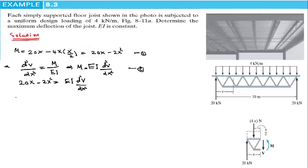Now we integrate two times in order to get v. Integrating once, we have EI multiplied by dv/dx equals 20/2, that is 10x squared, minus 2/3 x cubed, plus C1.